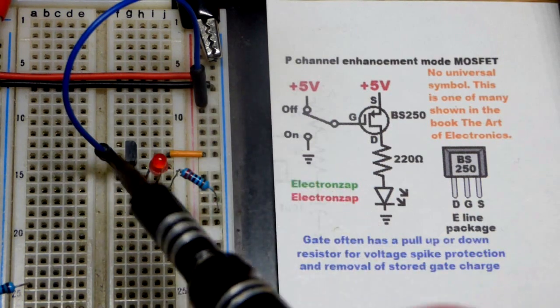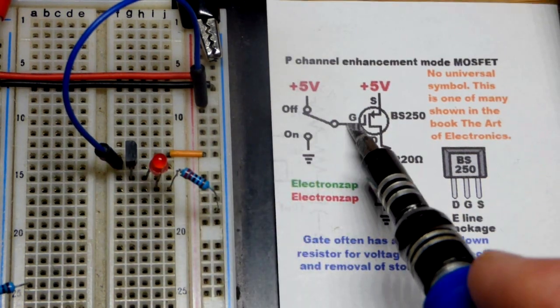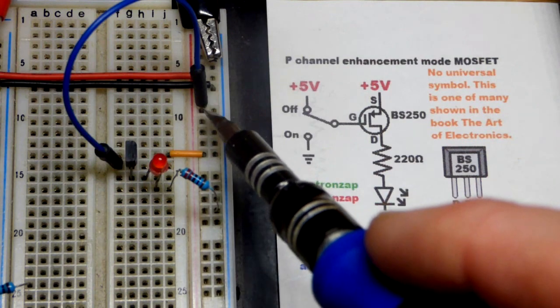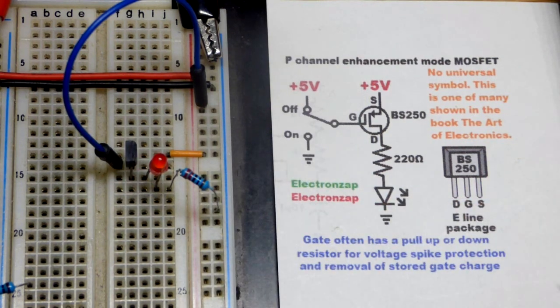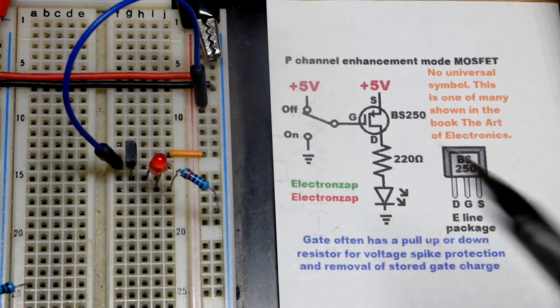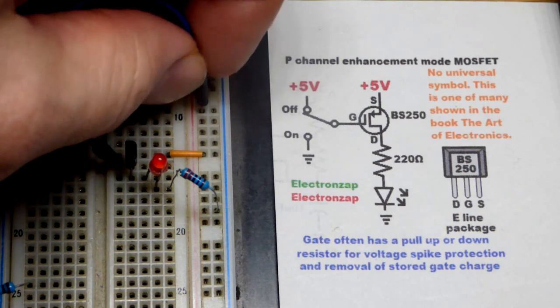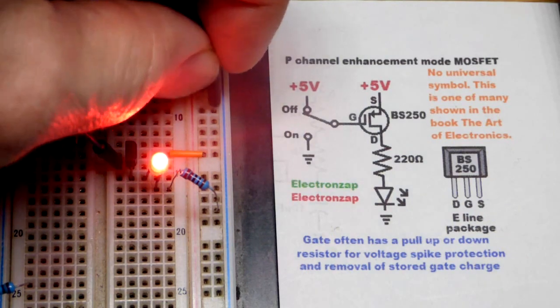We have the gate, not the base, the gate at the positive supply right there. That is holding it off right now. If we want to turn this transistor on, we move the jumper to the negative supply.